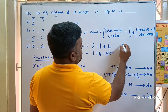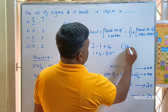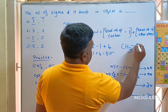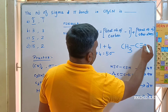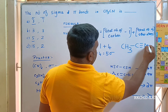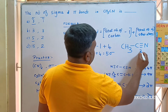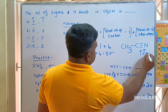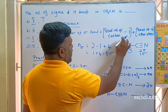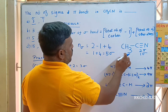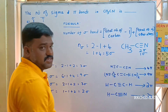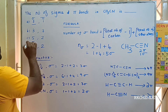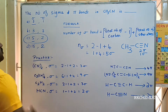Next step: pi bonds are determined from the structure. For CH₃–C≡N, the triple bond gives two pi bonds and one sigma bond, and the rest are all sigma bonds. So the answer is five sigma bonds and two pi bonds, which corresponds to choice C.